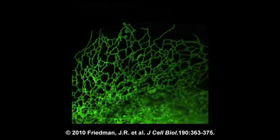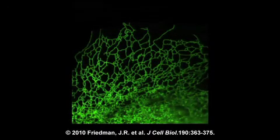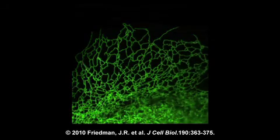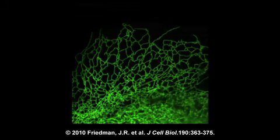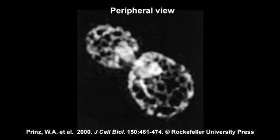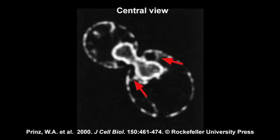In all eukaryotes, the peripheral endoplasmic reticulum is a continuous network of membrane tubules and cisternae that emerges from the nuclear envelope. In budding yeast, fluorescence microscopy suggests that the bulk of the ER forms a tubular network at the cell cortex, which is connected to the nuclear envelope by a handful of ER tubules traversing the cytoplasm.